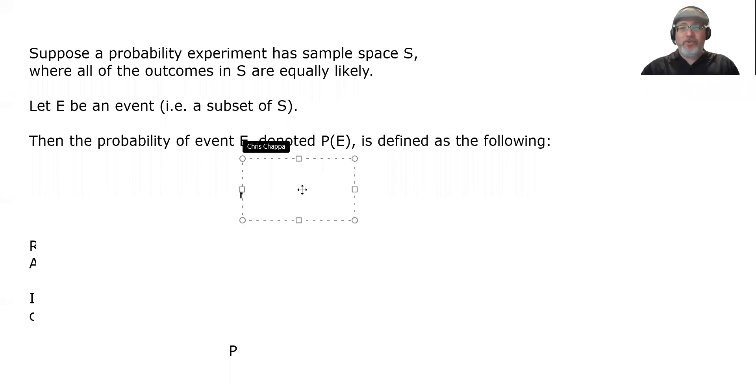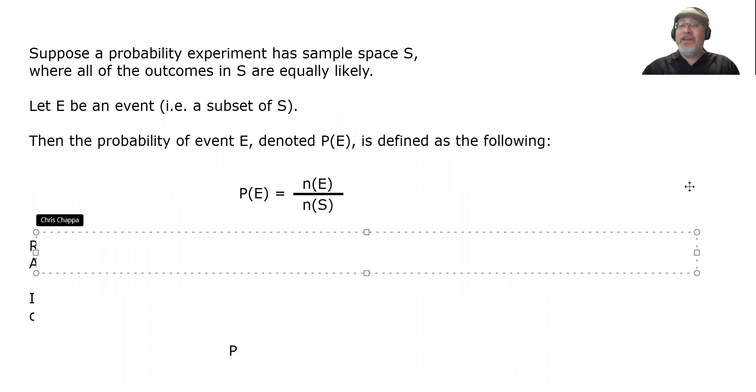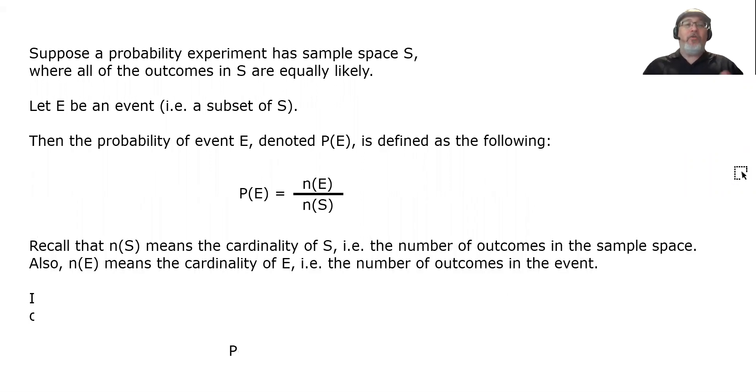P(E) equals the cardinality of the event divided by the cardinality of the sample space. And that is the same cardinality as when we first started this class back in Chapter 2. Recall that n(S) means the cardinality of S. In other words, the number of outcomes in the sample space. Also, n(E) means the cardinality of E. In other words, the number of outcomes in the event. That's what we just did in the previous example.